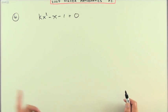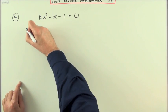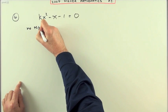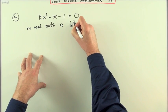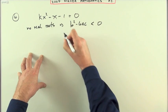Quadratic, roots, discriminant. No roots, discriminant should be less than zero. So I'll put that down. No real roots means that the discriminant b squared minus 4ac should be less than zero.